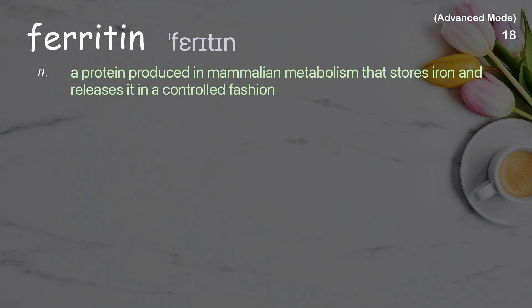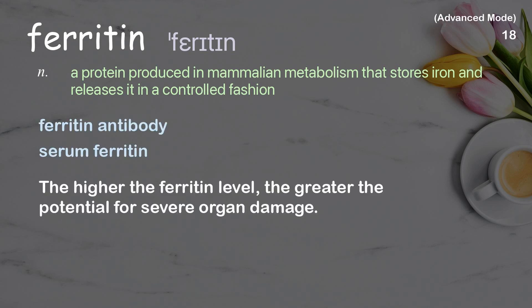Ferritin. A protein produced in mammalian metabolism that stores iron and releases it in a controlled fashion. Examples: Ferritin antibody. Serum ferritin. The higher the ferritin level, the greater the potential for severe organ damage.